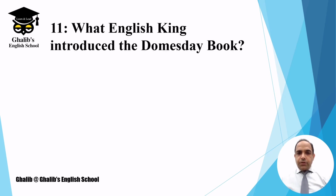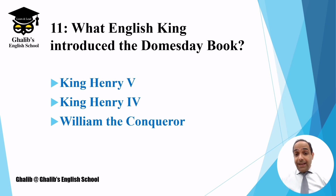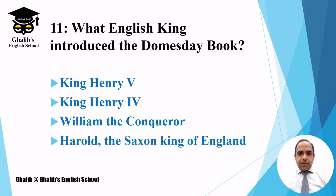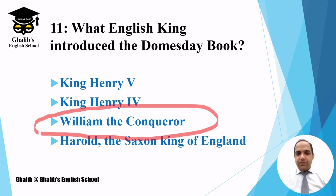Question number eleven: what English king introduced the Domesday Book? The Domesday Book was essentially a list of the names of people, towns, animals, and who owned the land. The options are King Henry V, King Henry IV, William the Conqueror, or Harold the Saxon King of England. The answer is William the Conqueror, who came from Normandy in the north of France and invaded England in 1066.